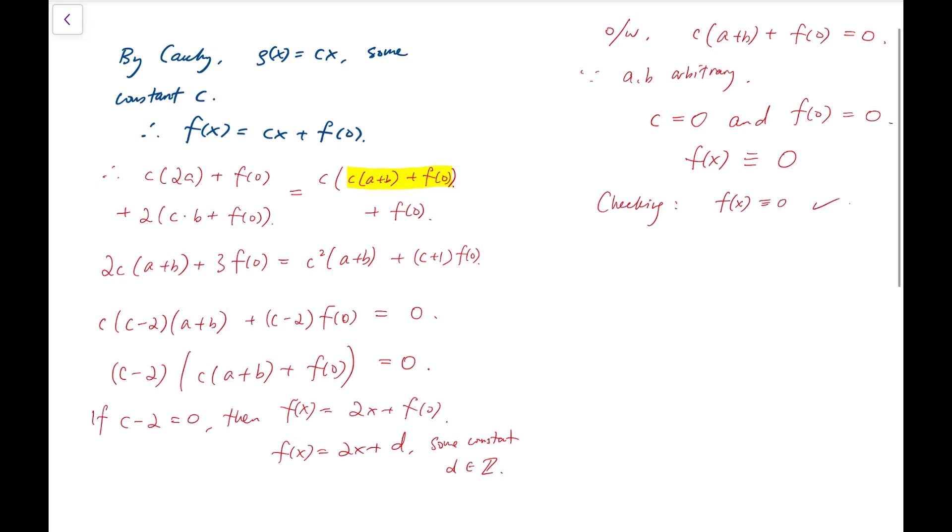You can put this back to checking just to make sure everything is right. Where f of x is constantly equal to 0 is obviously correct. For this family of functions, because d is any arbitrary integer, this equals 4a plus d plus 4b plus 2d, which is 4 times a plus b plus 3d, while f of f of a plus b equals 2 times 2 times a plus b plus d, added by d, which is also 4 times a plus b plus 3d. So these two are our final answers.